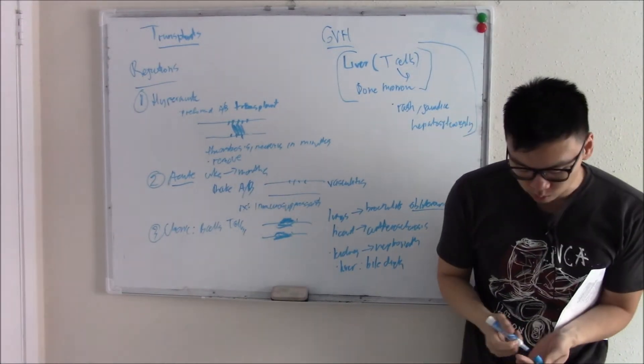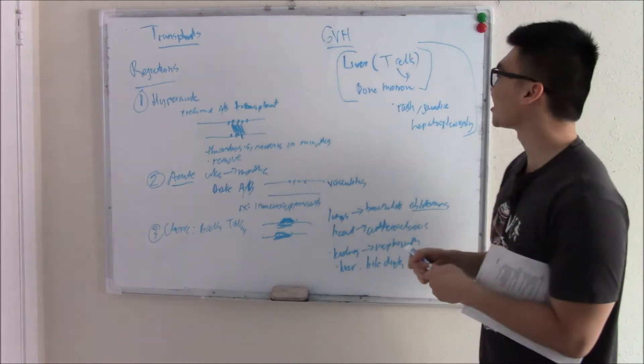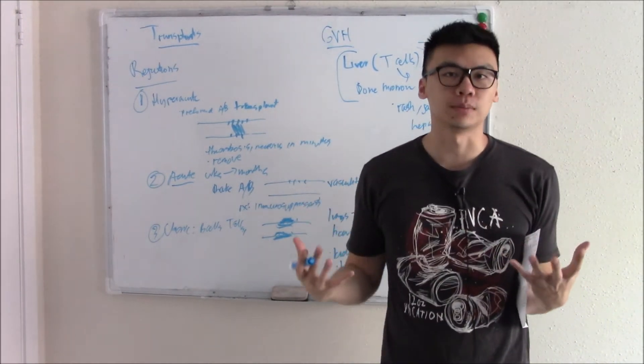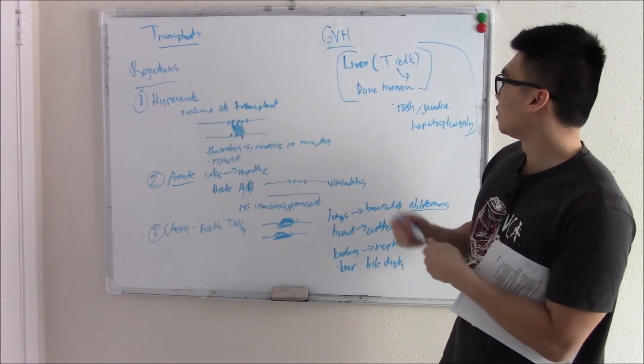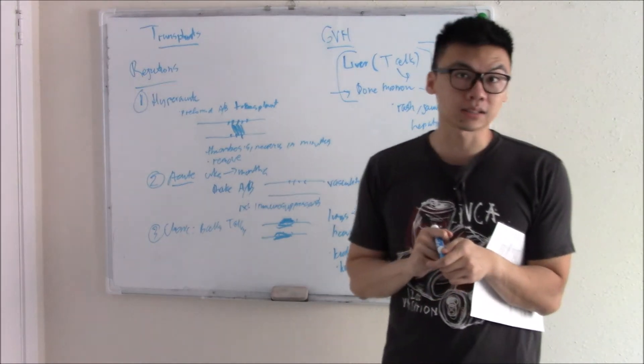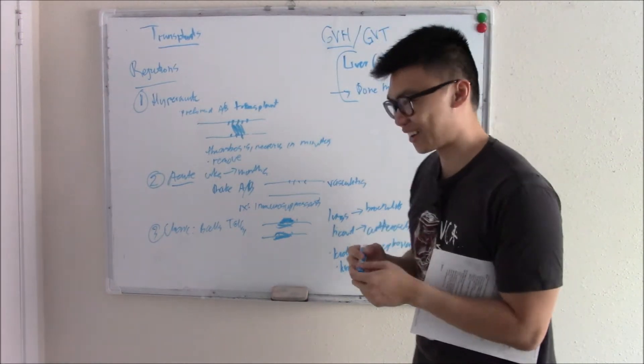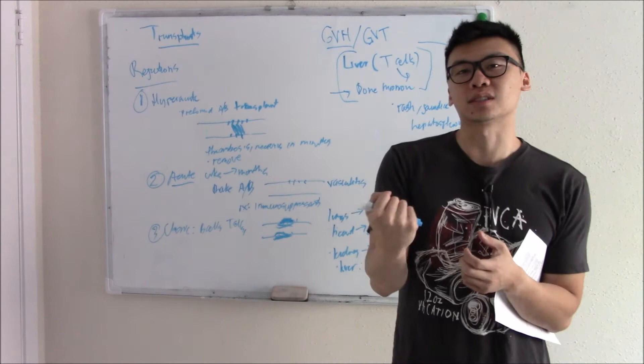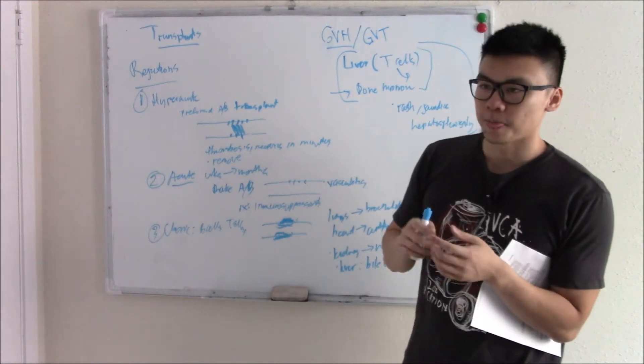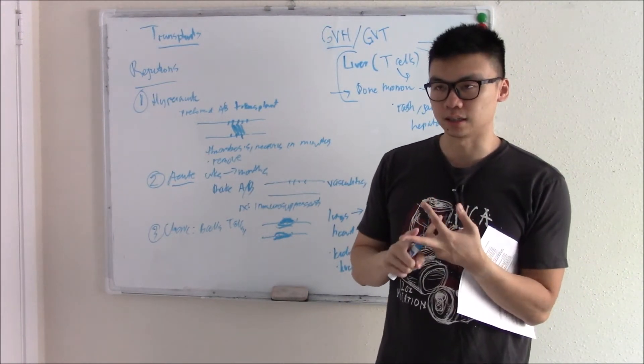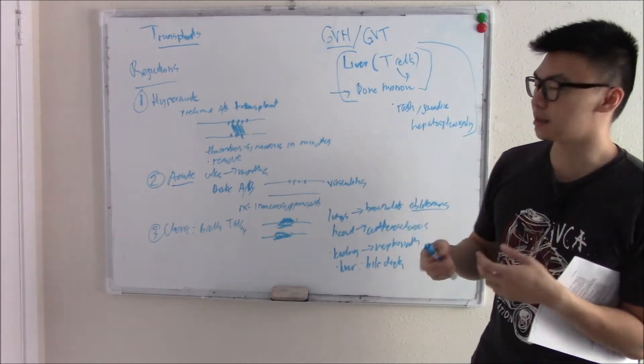You get rash, you can get jaundice, you can destroy your red blood cells, you can get hepatosplenomegaly. You see these signs, you're thinking graft-versus-host disease. They're particularly common in liver and bone marrow transplants. There are some times where we actually want this, and you're like, we want an attack on our own body? Well, how about a bone marrow transplant for a leukemia patient? Their bone marrow is making cancer cells. We don't want those. So if we give someone with normal bone marrow, maybe those T cells will destroy those cancer cells. We call that graft-versus-tumor.